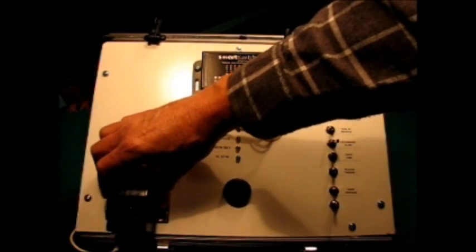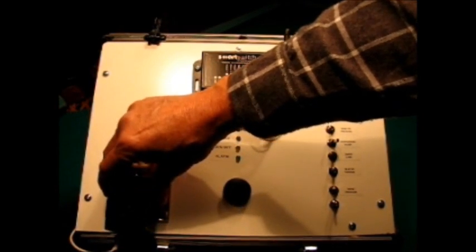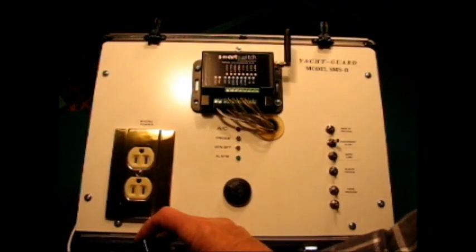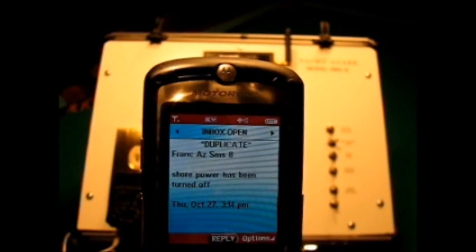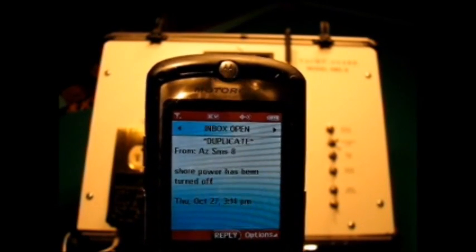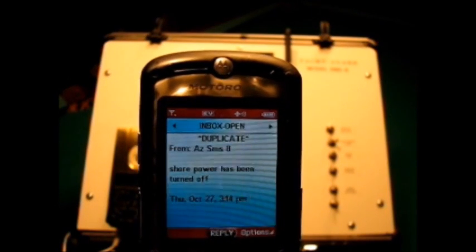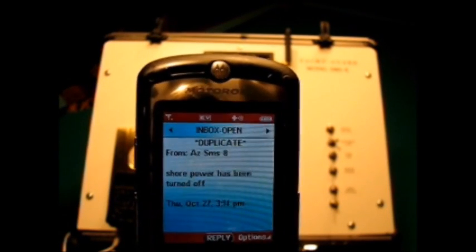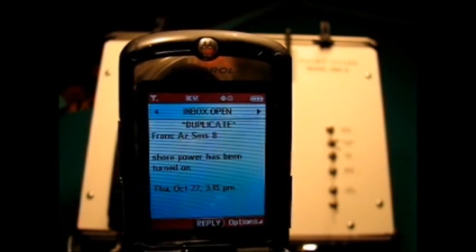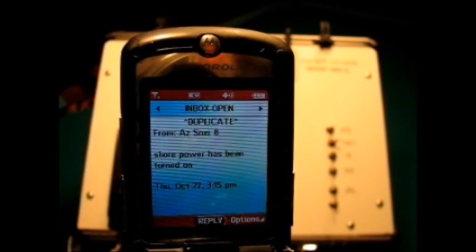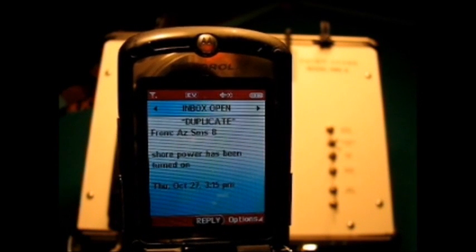If I manually disconnect shore power just by pulling the transformer from the plug, I'll get a message on my cell phone indicating that shore power has been disconnected. Once shore power has been reconnected, you get a second message showing that it has in fact been turned back on.